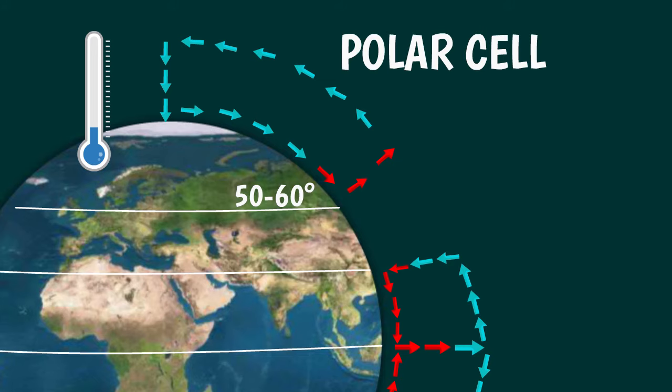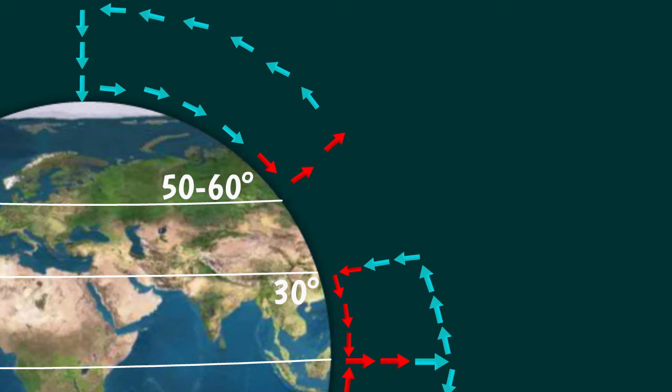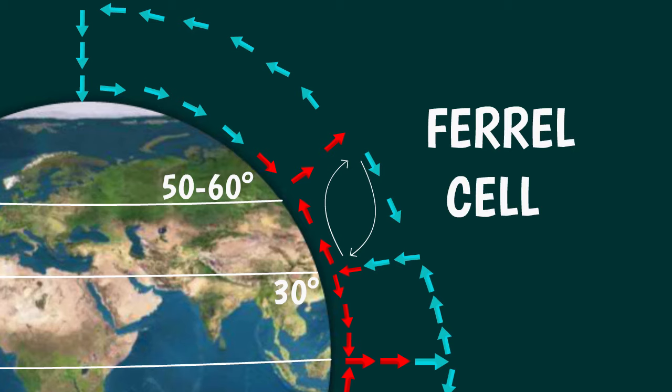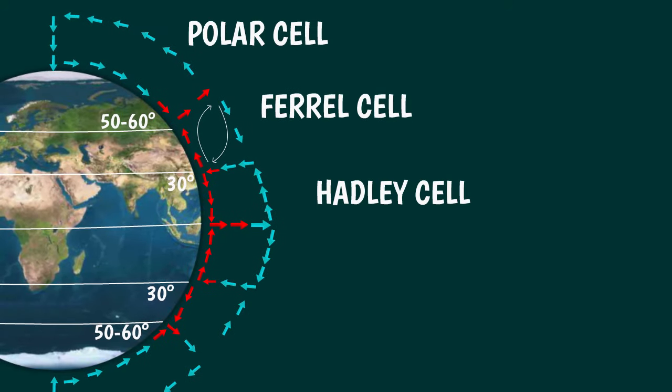Now let us see what happens between 30 degrees and 50 degrees latitude. As we have seen, when the air rises or falls it is replaced by air coming from the sides. This creates a third cell, the Ferrel cell, which differs from the other two because it spins in the opposite direction.